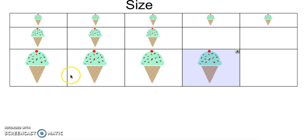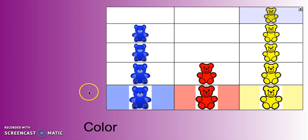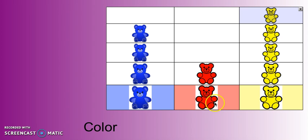Let's go back to our color picture to review what we've done in this video. We grouped our bears by color — blue, red, and yellow. Just by looking at this, we can see that we have the most yellow and the least red. This time we grouped by color.